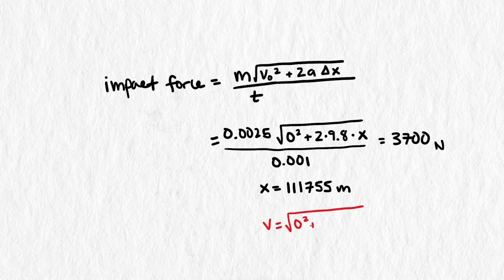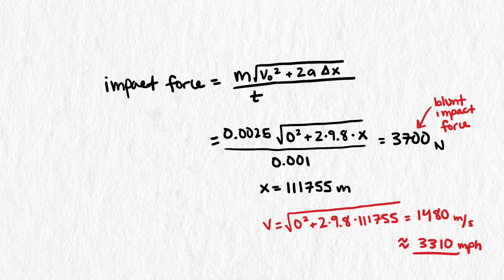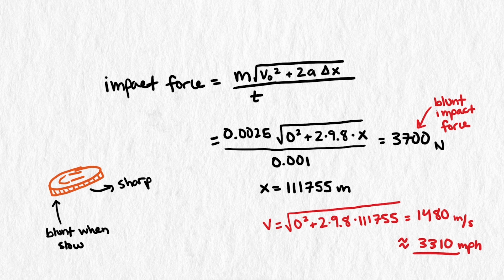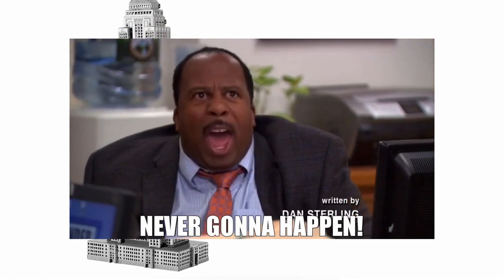At this distance, the penny would be traveling 1480 meters per second, which is 3310 miles per hour. To be honest, at this speed, there are many other considerations besides blunt impact force. In fact, our penny probably isn't even considered blunt anymore. It's essentially a bullet. You'll be dying of a lot more than blunt head force trauma. But let's be real. That scenario is never going to happen.